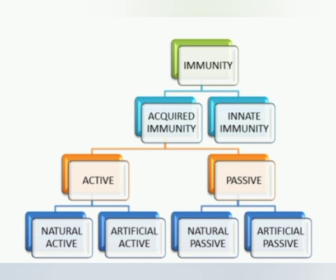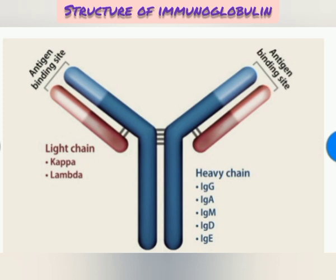Acquired immunity is immunity developed by an individual during their lifetime. Adaptive immunity is classified into natural immunity and artificial immunity. Natural immunity can be passive or active. Under artificial immunity, it comes as passive artificial immunity and active artificial immunity. Natural passive immunity is obtained from the maternal source, while active natural immunity is obtained through infections. Artificial passive immunity comes through antibody transfer, and active artificial immunity comes through immunization or vaccines.